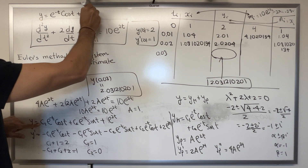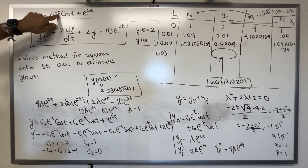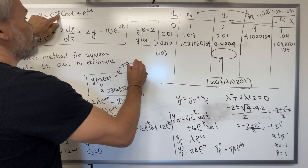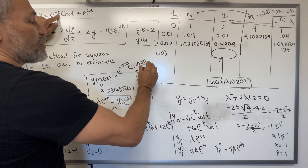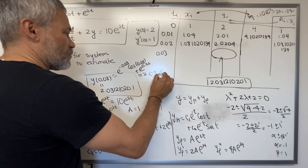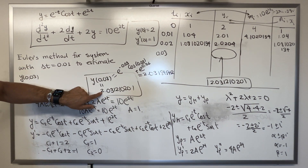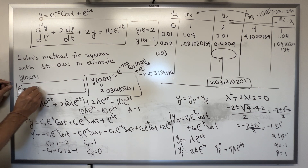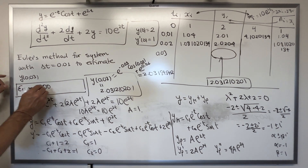We can now find the exact value by substituting t = 0.03: y(0.03) = e^(−0.03)cos(0.03) + e^(0.06) ≈ 2.031818454124. The error is the exact value minus the Euler estimate, which is approximately 6.0635 × 10⁻⁴.